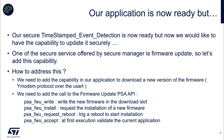The last API is named PSA firmware update accept. This API should be called by the newly installed application at its first execution — meaning the application confirms it is running well. If the new installed application doesn't call this API and there is a reset, we will roll back to the previous version. It's a way to ensure the new application is running well, so it's up to you to define criteria to check if your application is running properly. Once you have accepted this version, you can't roll back to the previous one.